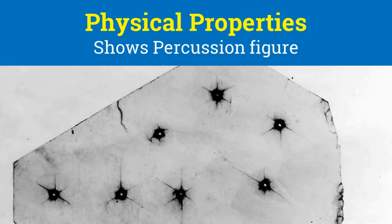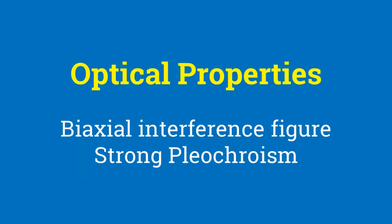Mica also shows a percussion figure, which means that when a blunt steel punch is placed on a sheet of mica and lightly struck, a small 6-rayed star is produced, which is called a percussion figure. One of these cracks in mica is always in the direction of the plane of symmetry. As regards optical properties, mica minerals have a biaxial interference figure and show strong pleochroism.